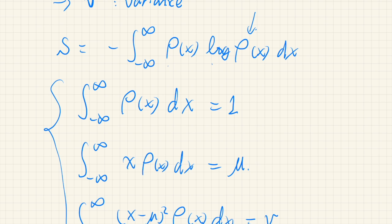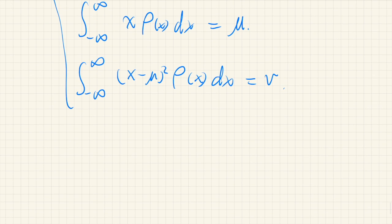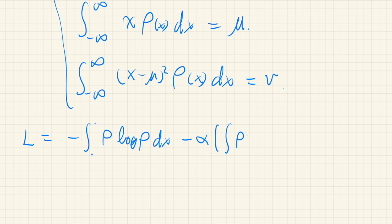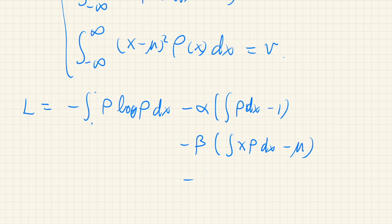Now let's set up the Lagrangian for this optimization problem. We write L as the integral of −ρ log ρ dx, with Lagrange multiplier α for the normalization (integral of ρ dx − 1), multiplier β for the mean (integral of x·ρ dx − μ), and multiplier γ for the variance (integral of (x−μ)²·ρ dx − V).